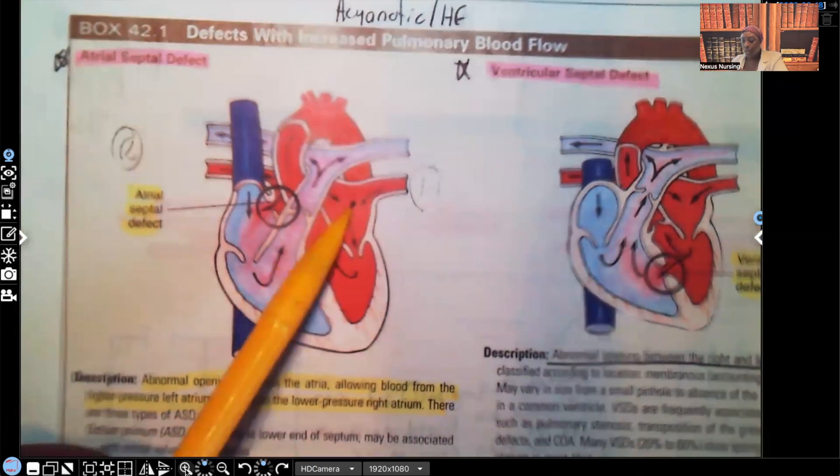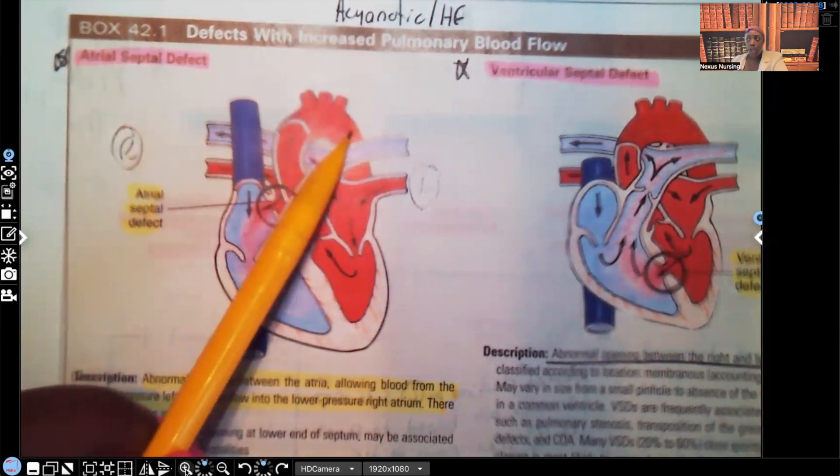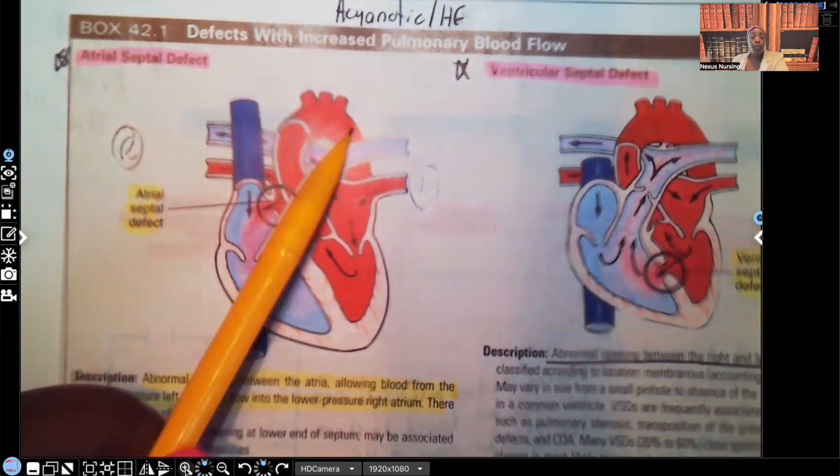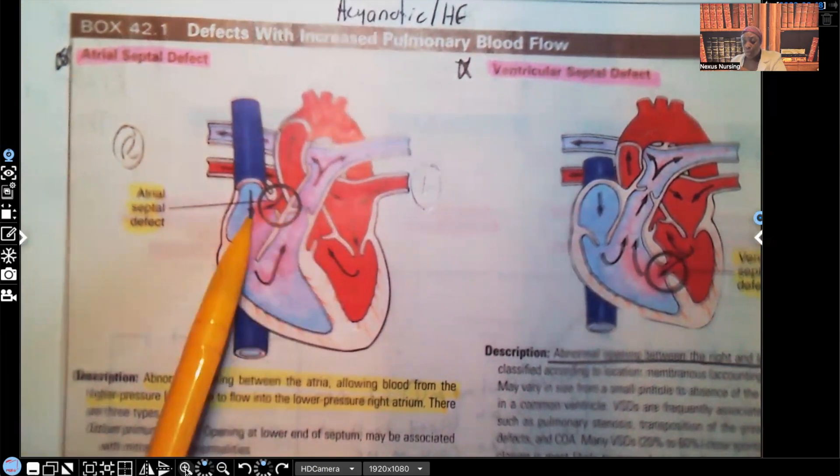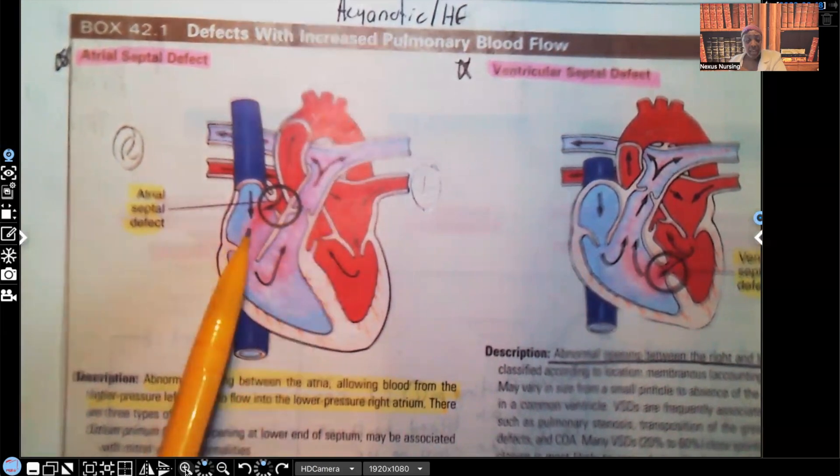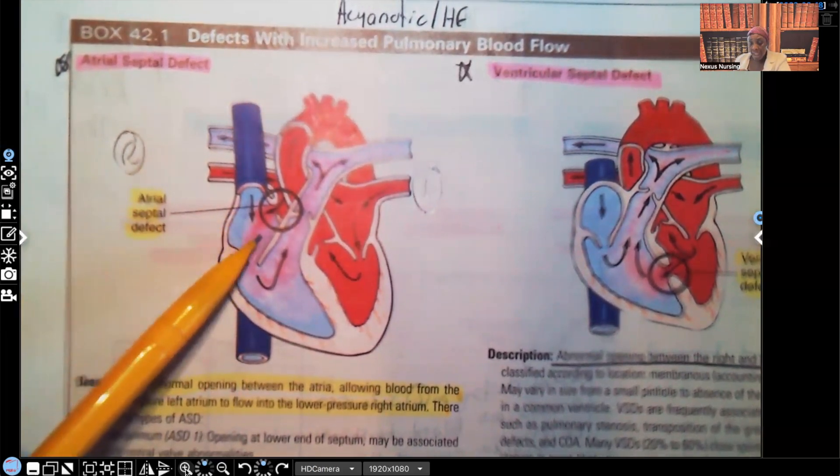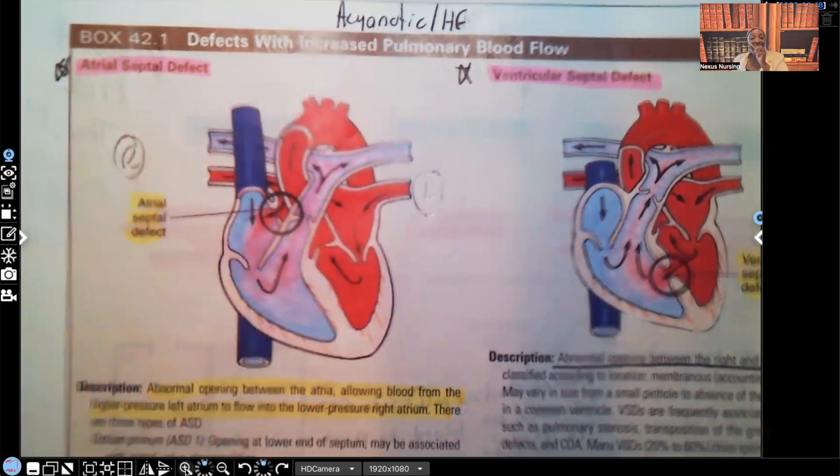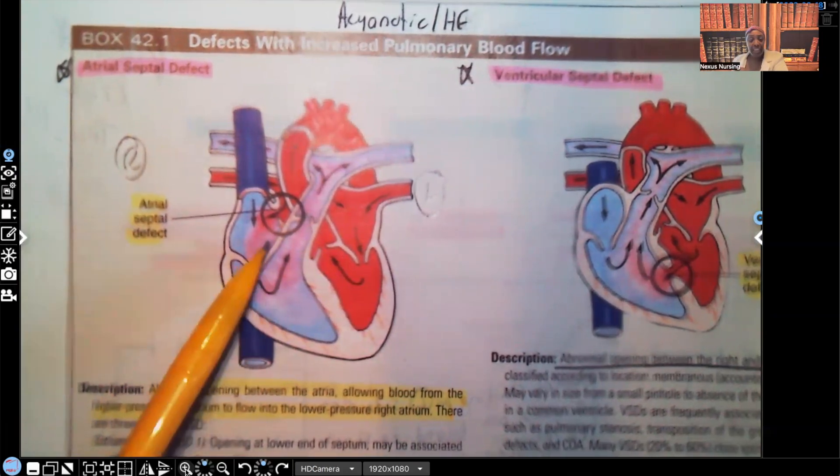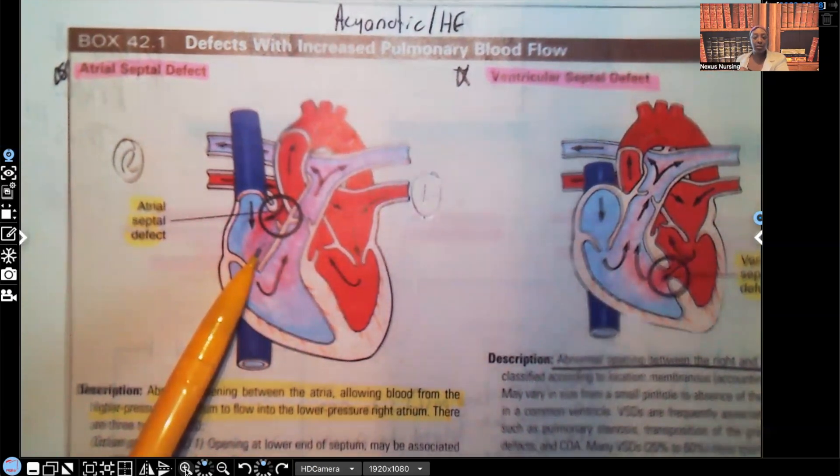Oxygenated blood that just came from the lungs is coming from the left atrium down to the left ventricle, and it's supposed to go through that semilunar valve to the aorta to go to the body, to the brain, to the kidney, to the spleen, to perfuse all of those tissues. But look at what's happening. There is a hole between the left atria and the right atria. Now we have oxygenated blood being mixed with unoxygenated blood. This is why the patient with atrial septal defect is not turning blue. They're not being cyanotic because there is some amount of oxygenated blood.